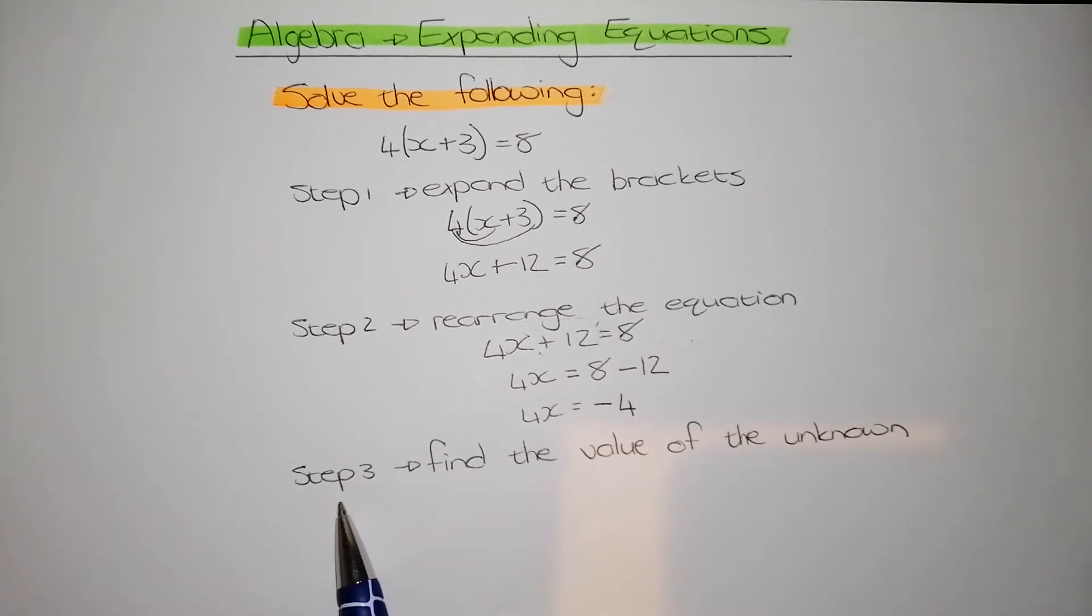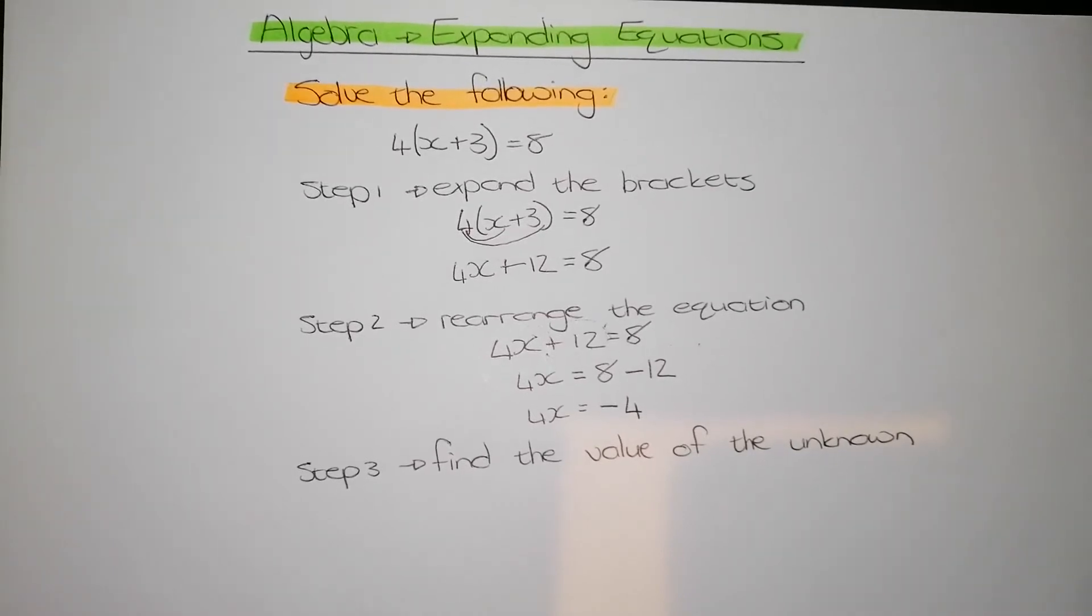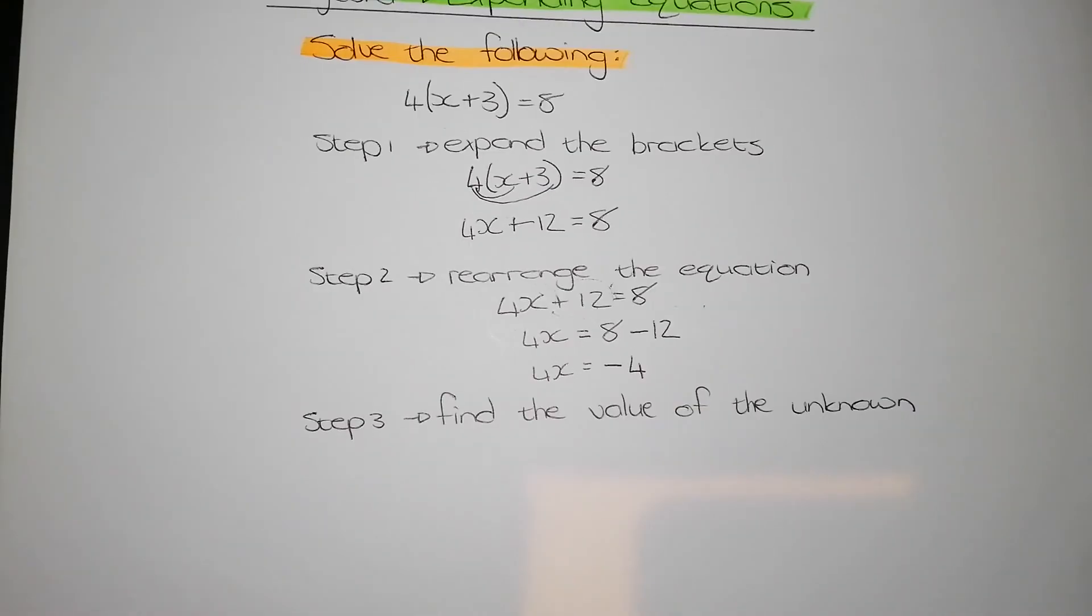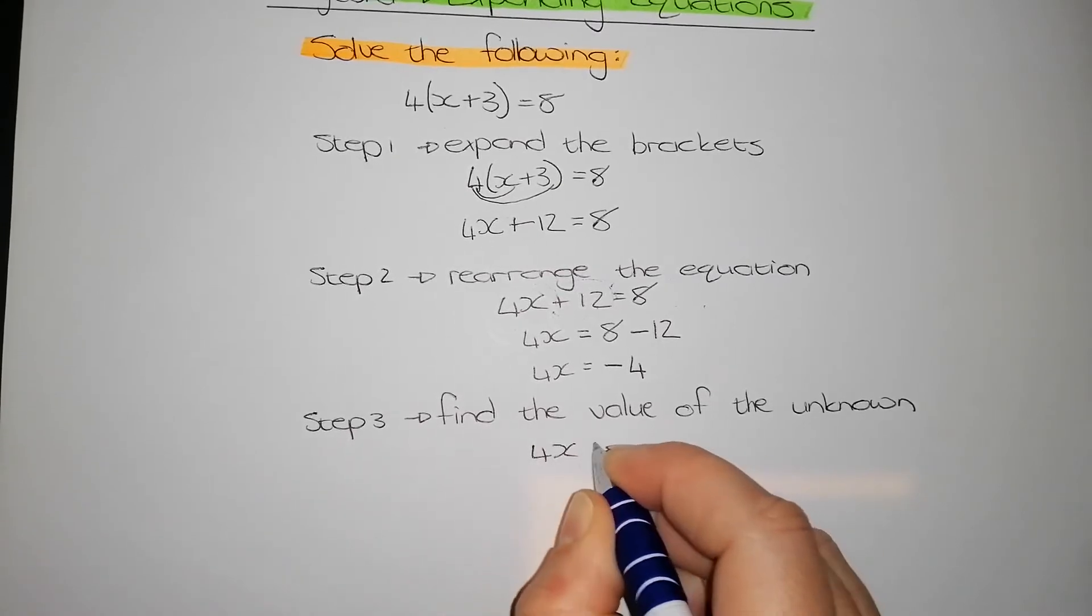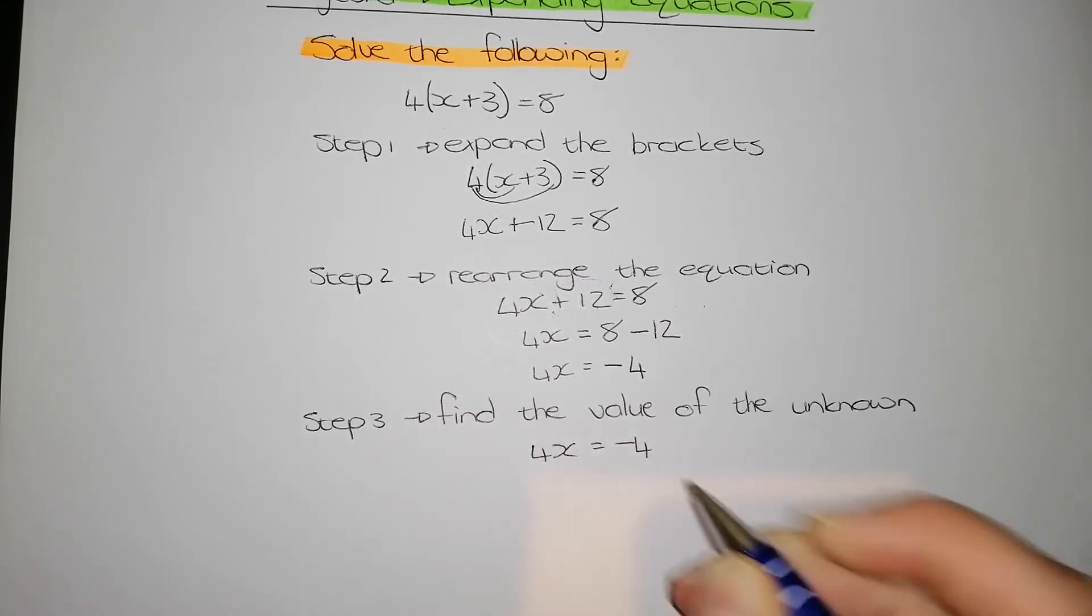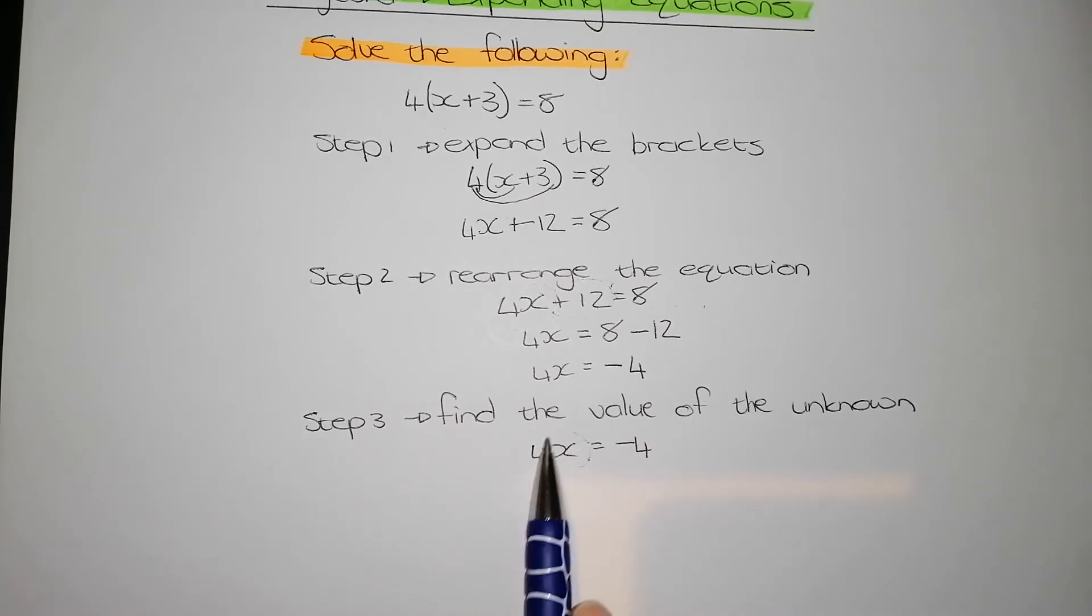Then I go to step 3, which says find the value of the unknown. So first of all, I'm going to rewrite my equation. When I rewrite my equation, I have 4x = -4. For me to find the unknown here, I need to get rid of this 4.